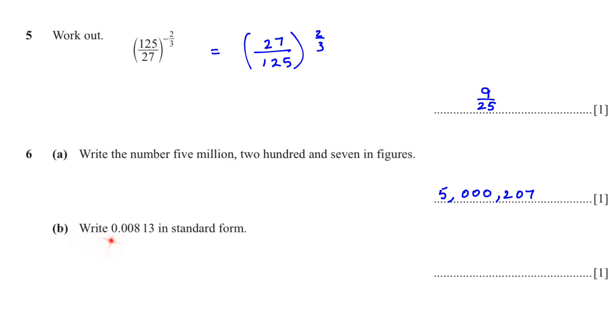Part B, write 0.00813 in standard form. When we are writing in standard form, we can have only one digit before the decimal. So we have to move the digit 1, 2, and 3 places. 8.13. If you move your digit to the right, the power will be negative. Because we moved 3 places, the power is 3 and because we moved the digit on the right, it's negative. So it's 8.13 times 10 to the power of negative 3.